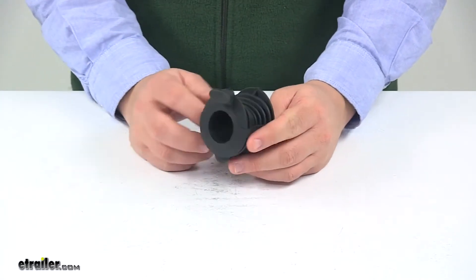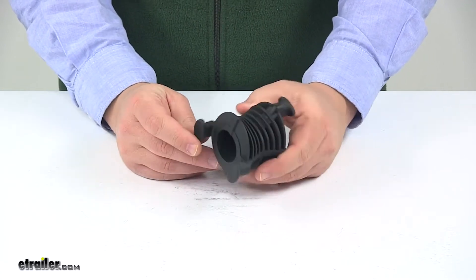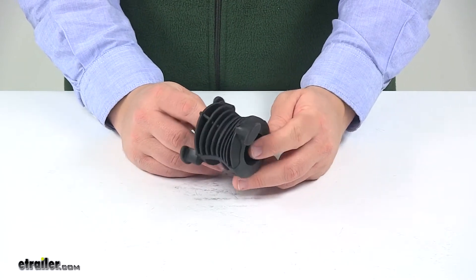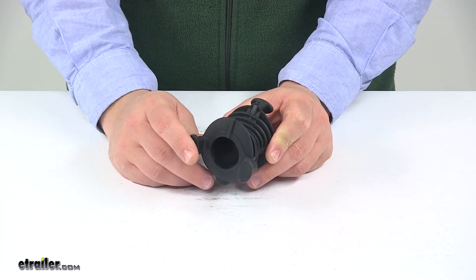Today we're taking a look at the replacement holdfast cradle for the Thule Vertex bike racks. This unit replaces one holdfast 5050 cradle for your Thule Vertex bike rack.